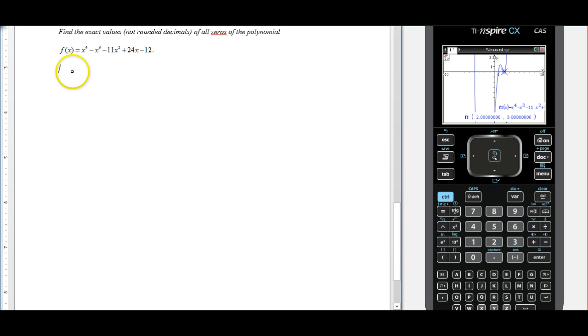So in my problem, I've got a double zero at 2. So let's go ahead, if I've got a 0 at 2, that means x minus 2 should be a factor. If that's a factor, it should divide out in synthetic division. So let's check. So 2, I get 1, negative 1, negative 11, 24, negative 12.